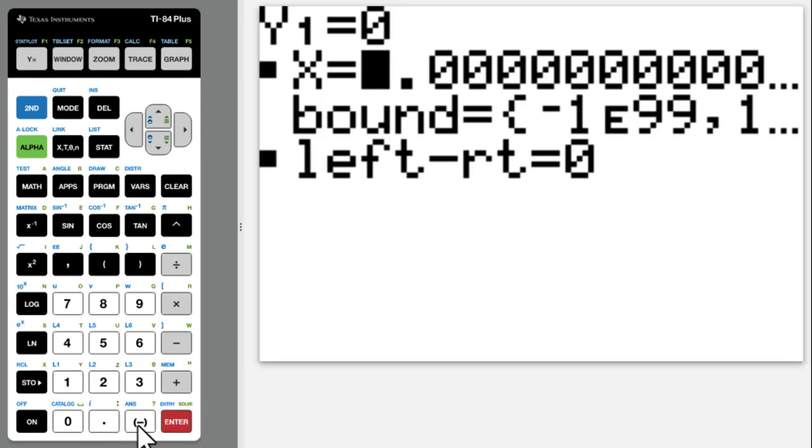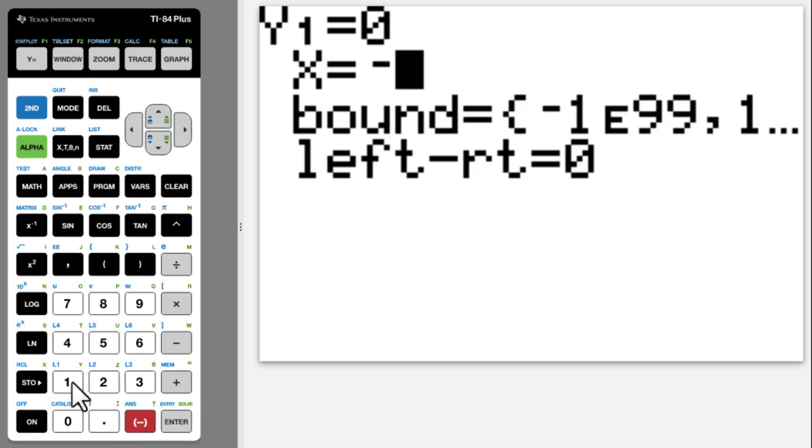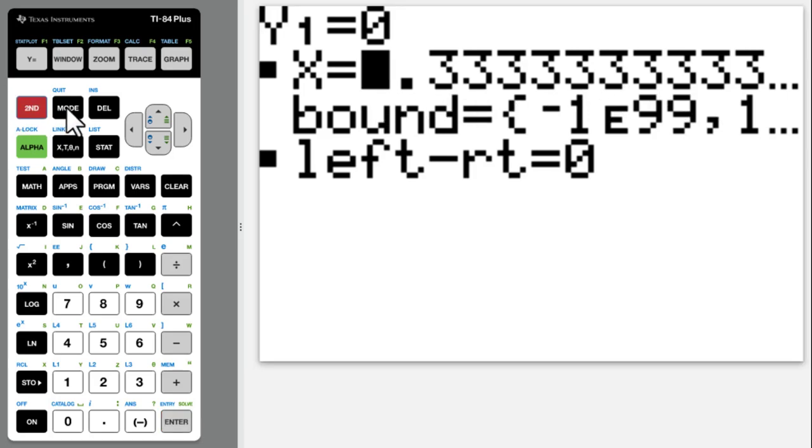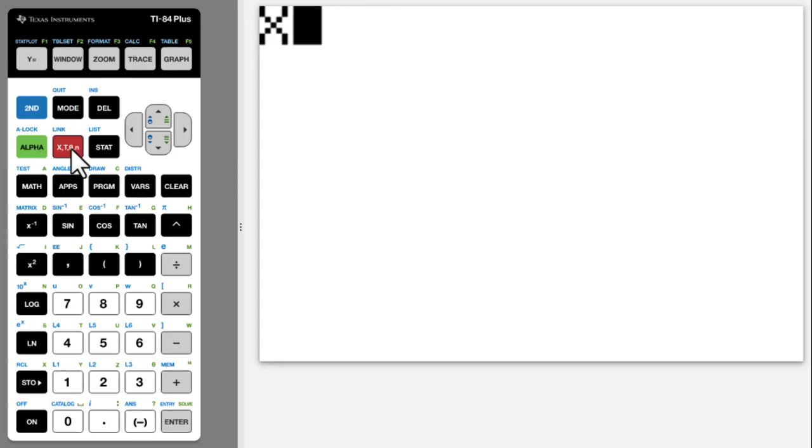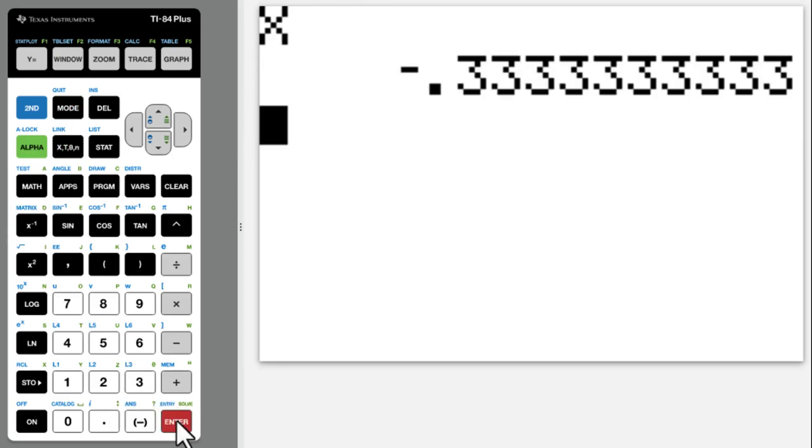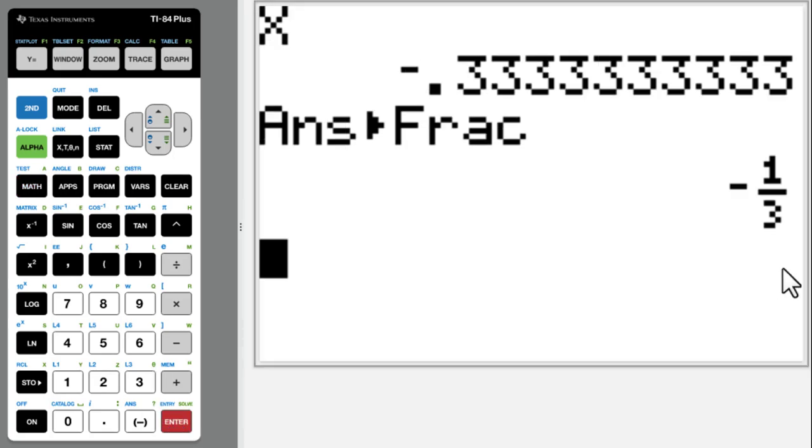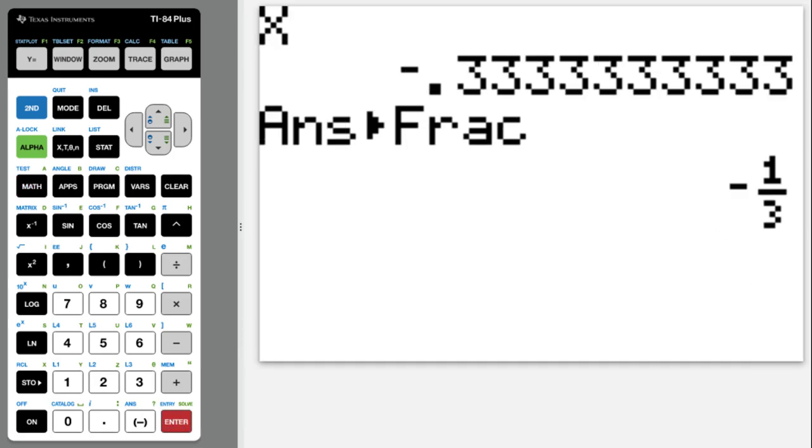This time we will put negative 10, then alpha enter. Answer will be negative 0.3333. So we quit. Press this x, enter, then math, enter, enter, get fraction. Negative 1 over 3.